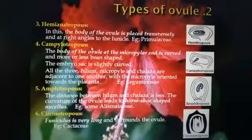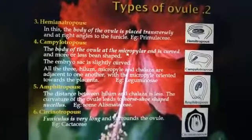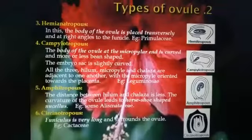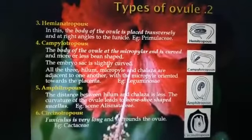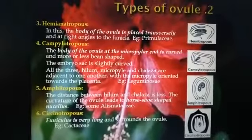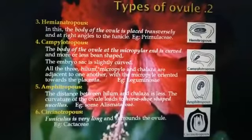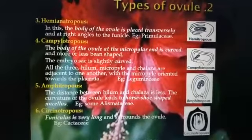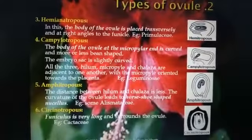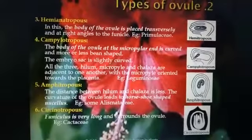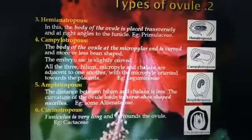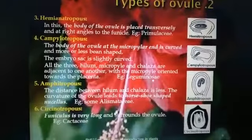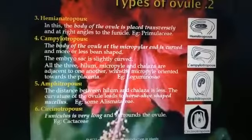The next type is the campylotropous ovule. Here the body of the ovule at the micropylar end is curved, and it more or less resembles a bean shape. The embryo is also slightly curved. The funicle, micropyle, and chalaza are more or less adjacent to one another. This type of ovule is present in the Leguminosae family — all pulse varieties contain campylotropous ovules.